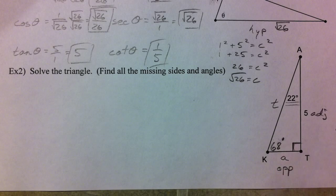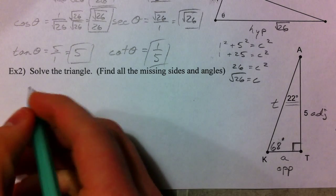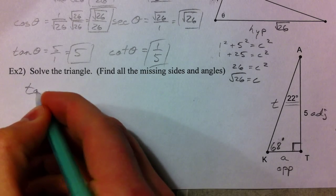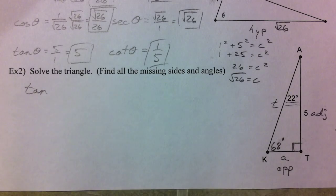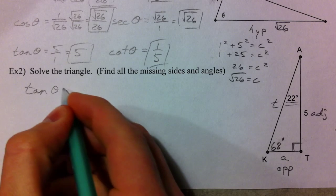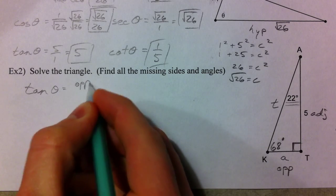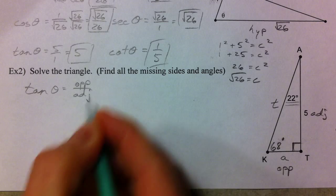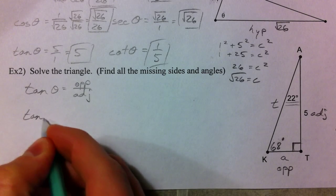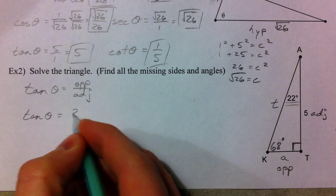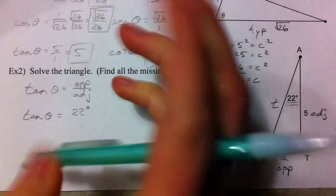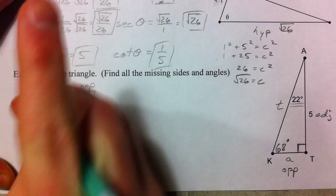So opposite and adjacent, that sounds a lot like the Toa. So our tangent. Tangent of our angle theta is opposite over adjacent. So I'm going to set up a ratio. Tangent of my angle in my triangle, 22 degrees, sorry, let's try that again.